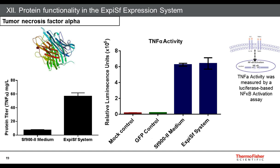To check functionality of proteins expressed in the XPSF system, we used tumor necrosis factor alpha (TNF-alpha) as a model, observing about four-fold improvement in yield. After purification, we used a TNF-alpha activity assay based on luciferase-driven NF-kappa-B activation in an engineered cell line. The results showed great comparability in functionality between TNF-alpha produced in SF900 II medium and the XPSF system.